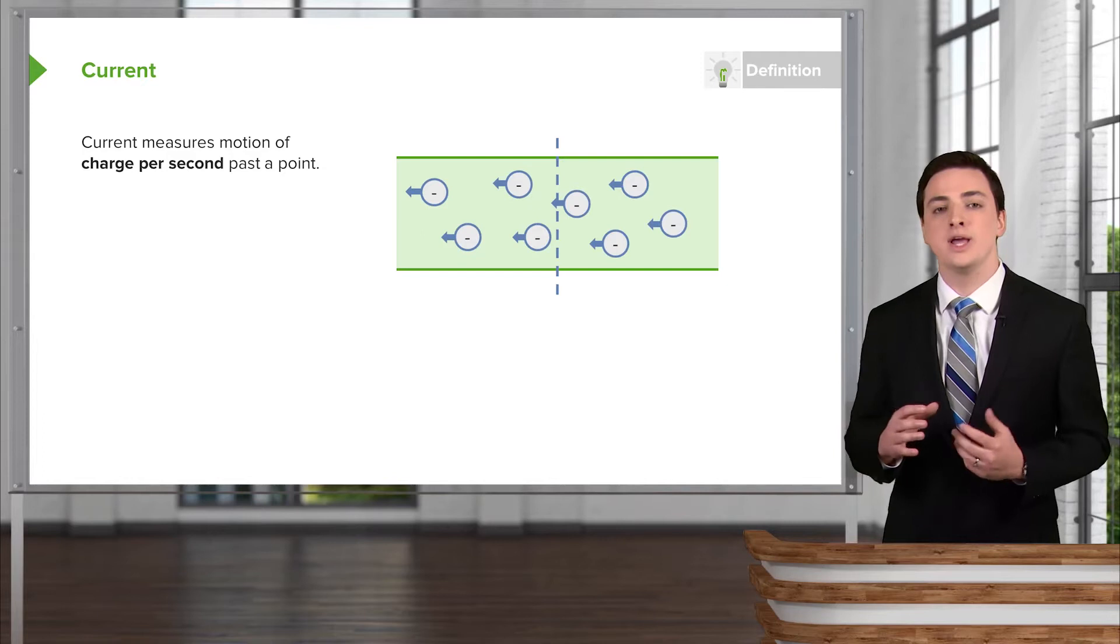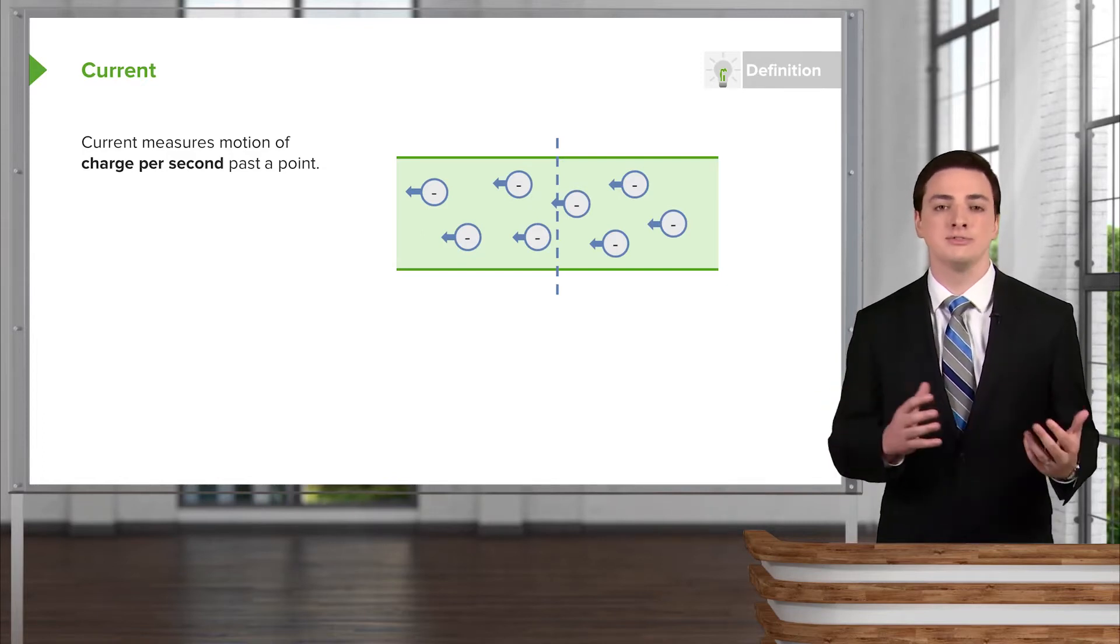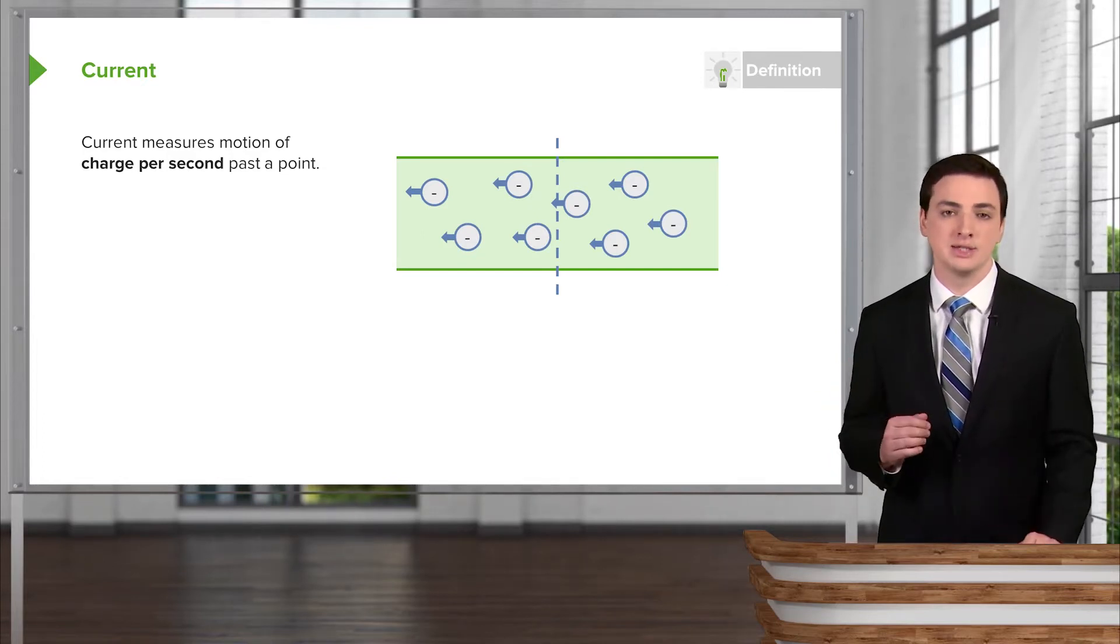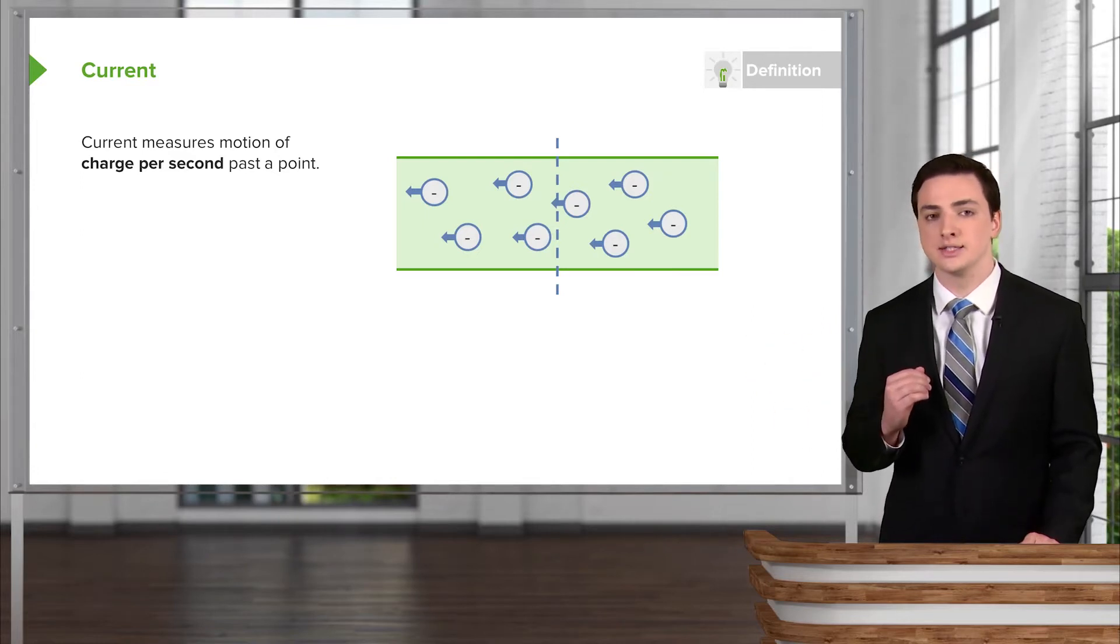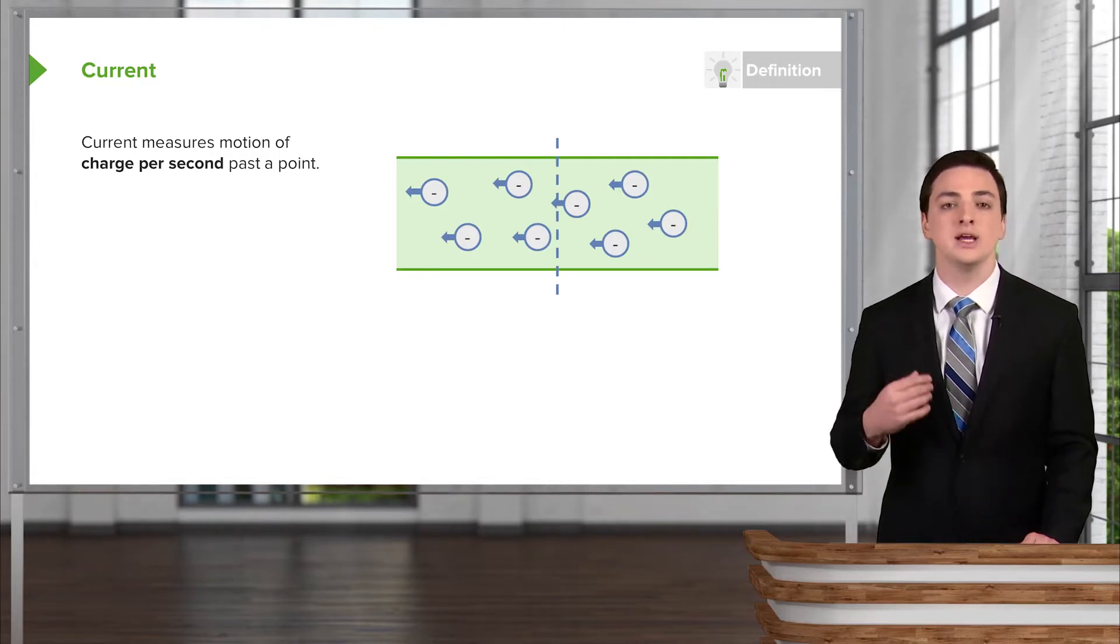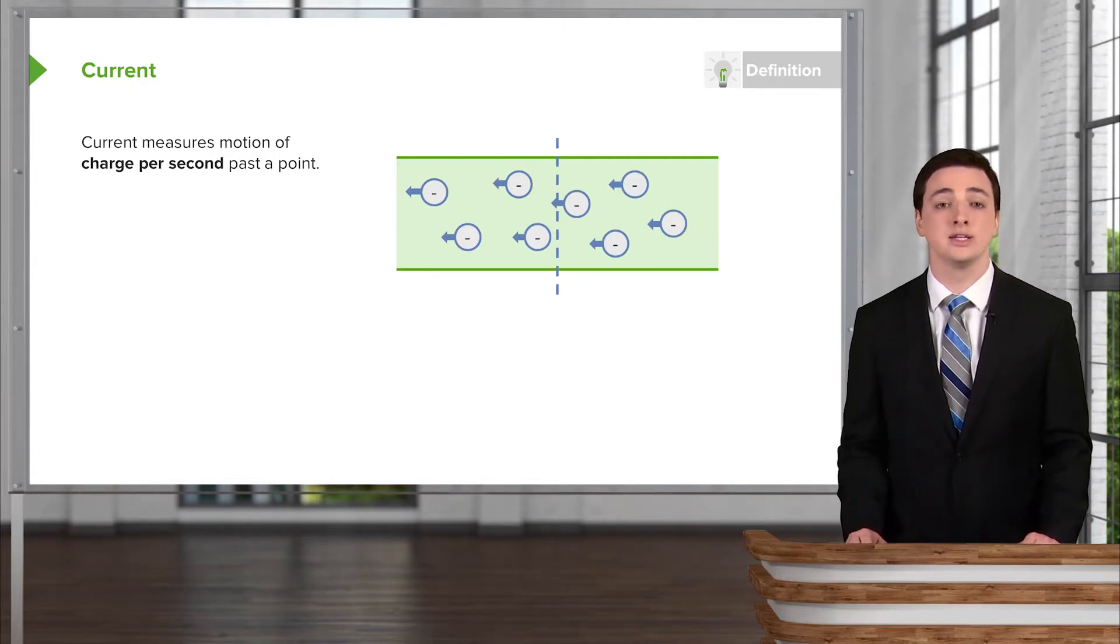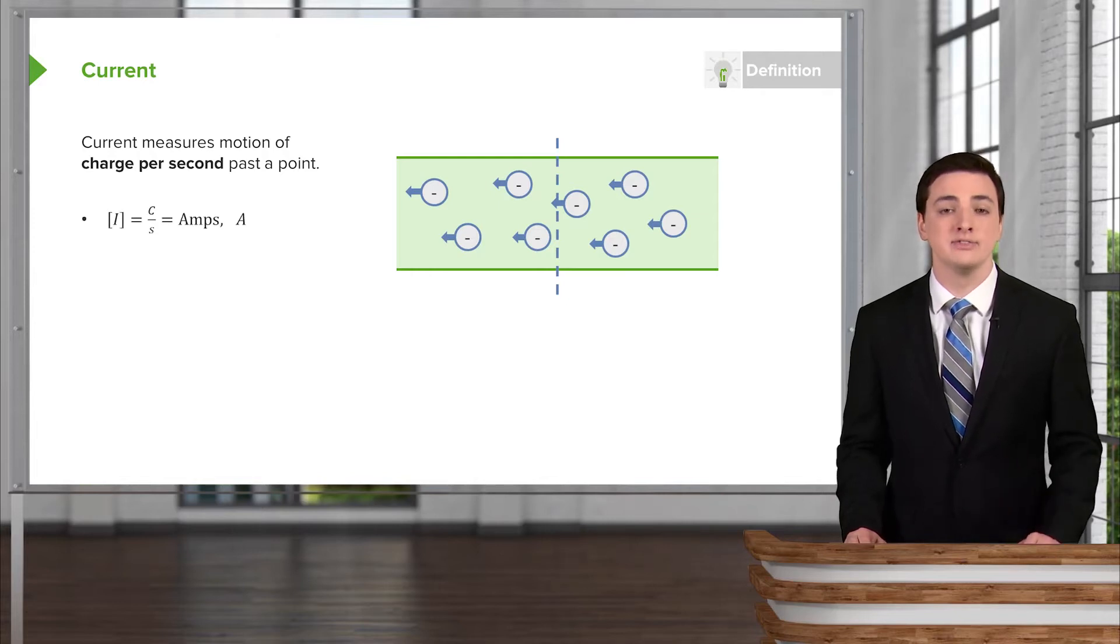So for example, in this wire that we have here, we have a wire with current flowing through it. That's all these electrons that we've shown moving here. And then they're all flowing past this dotted line, this particular point in our circuit. And current is measuring how many electrons are passing this point in a given amount of time, in a given second.